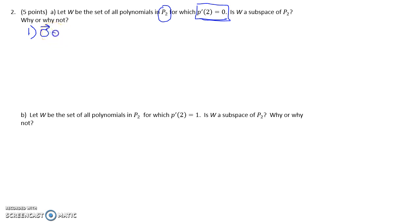So the 0 vector takes on different forms depending on the vector space. For a collection of polynomials, the 0 vector in P2 is just the 0 function, the constant function P of x equals 0. That has degree less than 2, so it's in P2. And the derivative of that function is 0 everywhere, so certainly the derivative at 2 would be 0. For the 0 function, just any constant function, the derivative is 0 everywhere. And so this condition is satisfied.